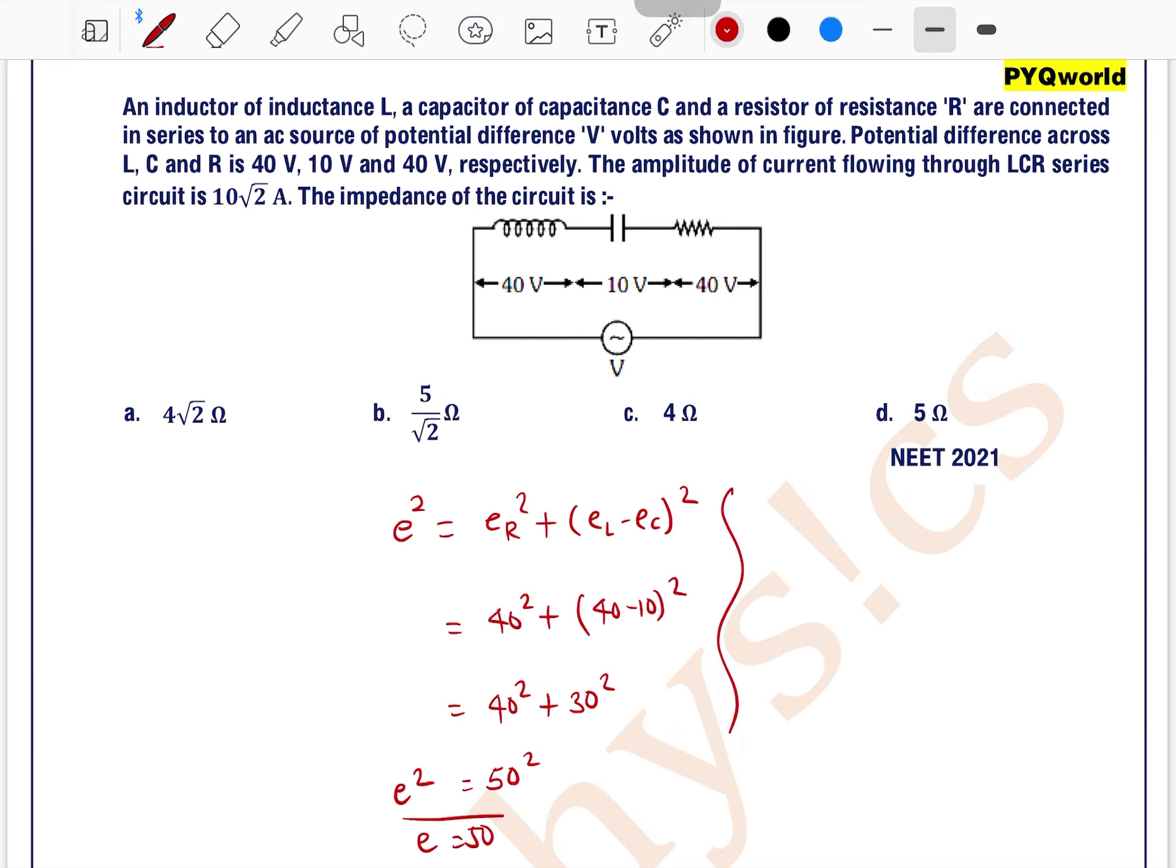So, E² is equal to 50². So, we can write E is equal to 50. The total voltage is equal to 50V. From this we can find the impedance.